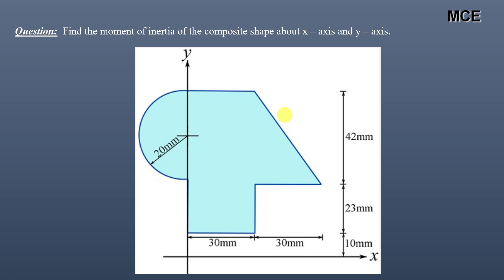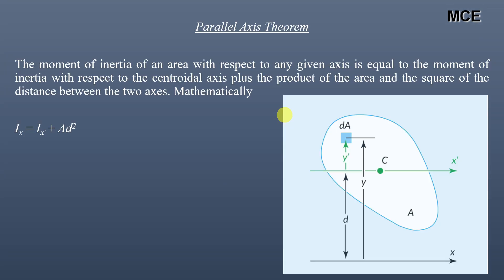Before finding the moment of inertia of this composite shape, we will first learn about the parallel axis theorem. The parallel axis theorem states that the moment of inertia of an area with respect to any given axis is equal to the moment of inertia with respect to the centroidal axis, plus the product of the area and the square of the distance between the two axes.